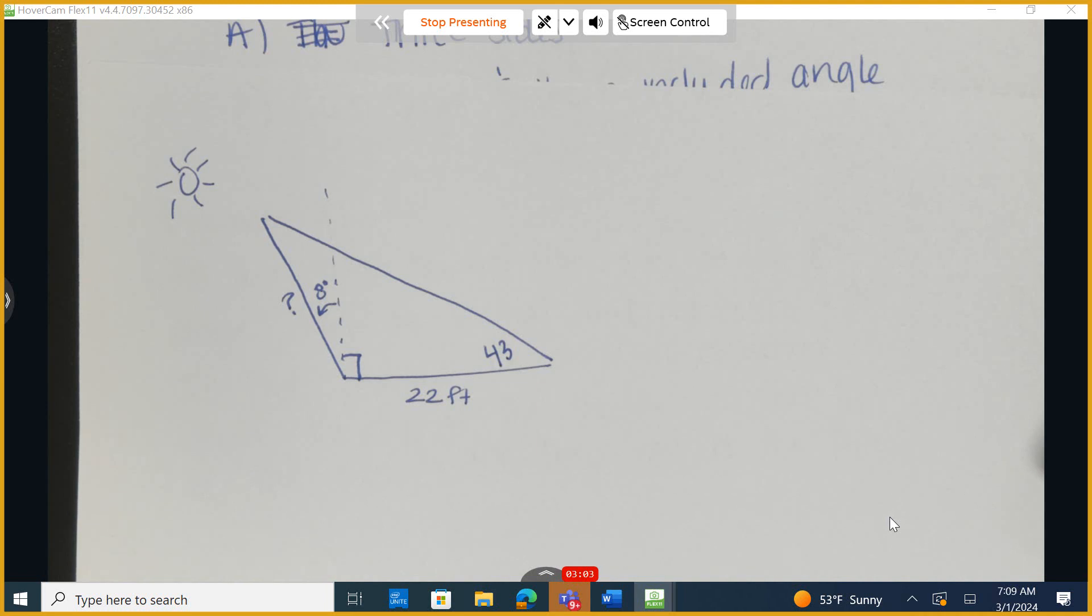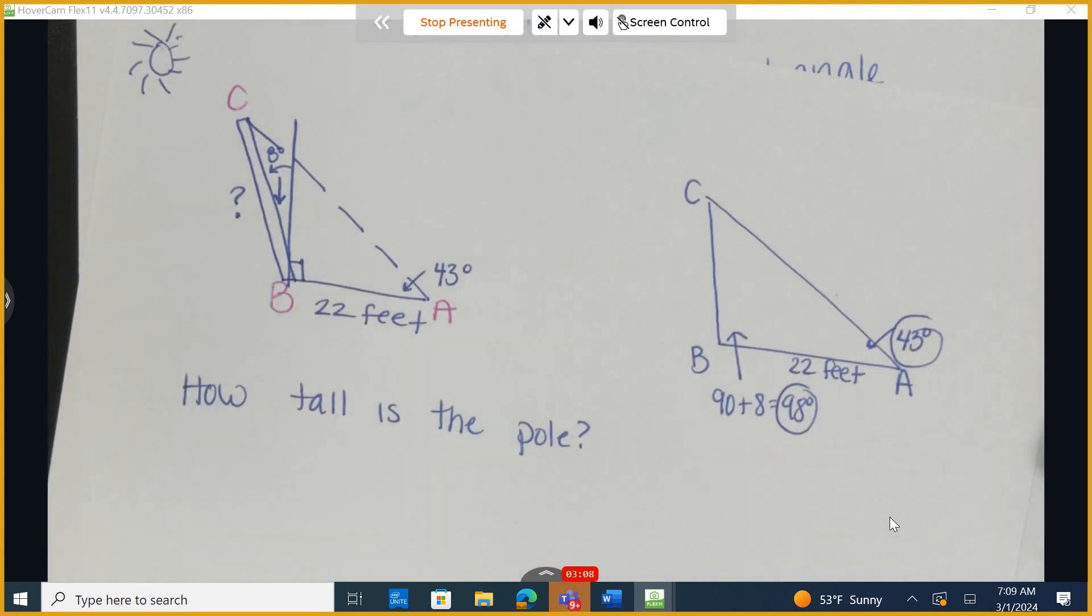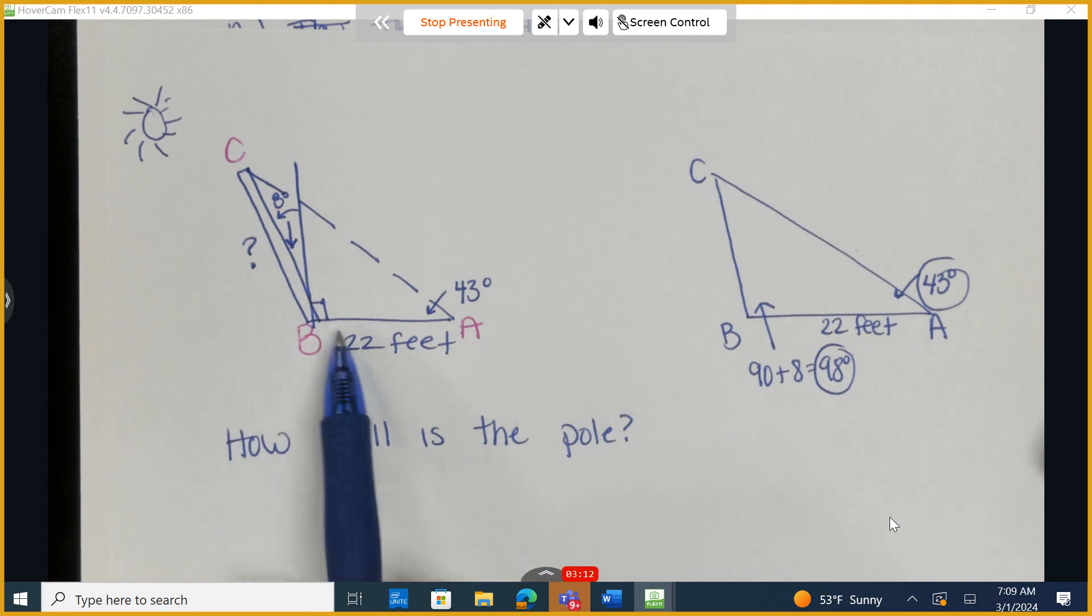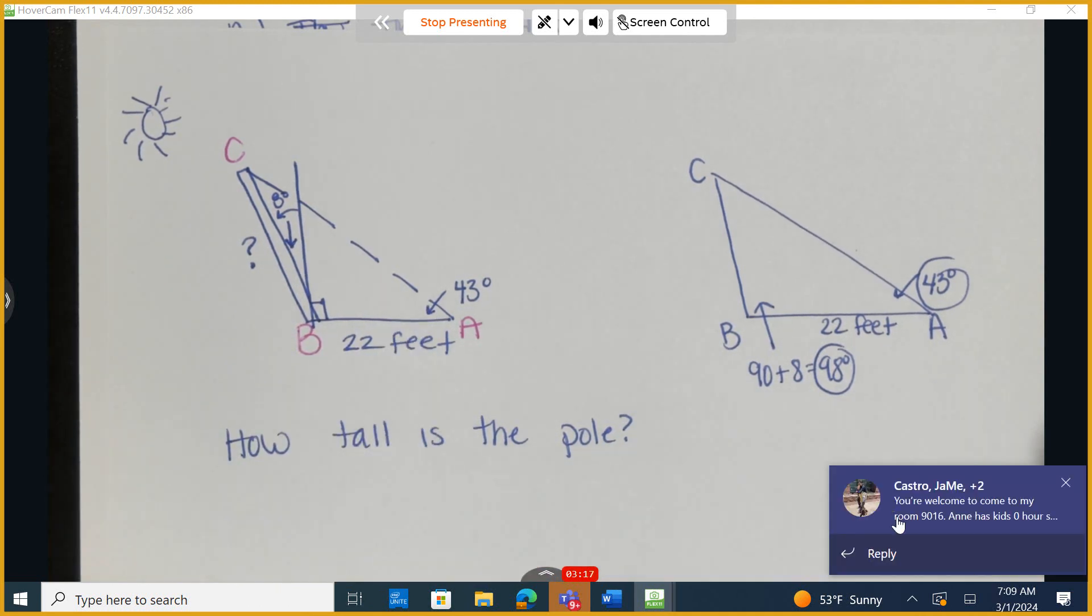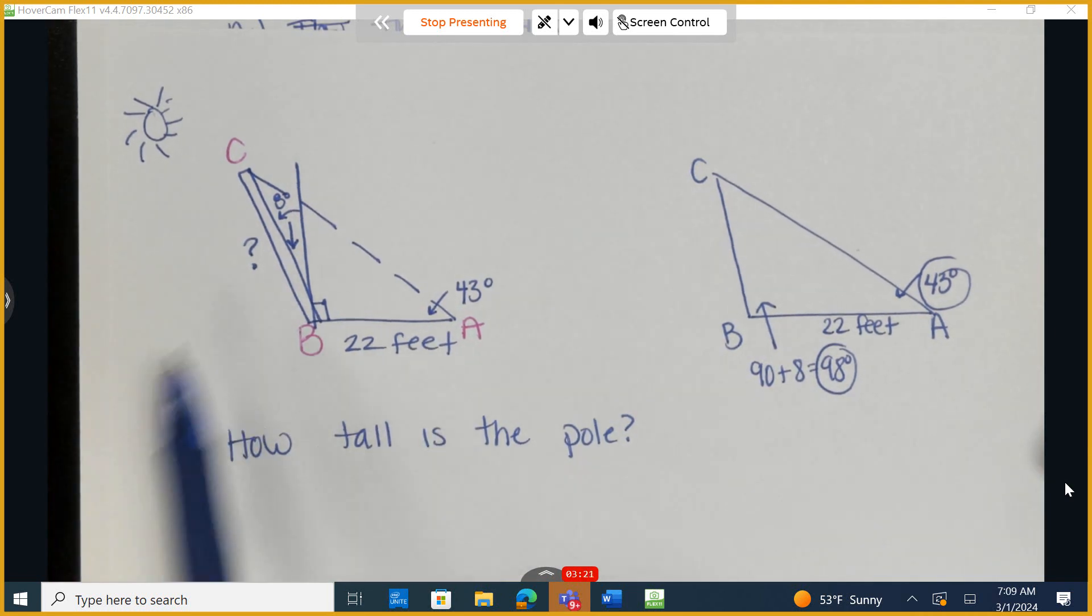So I went ahead and I drew this picture a little bit better. This is my pole. This is the 8 degrees where it tilts towards the sun. This is the shadow that's cast that's 22 feet long, and the angle of elevation. And we want to know ultimately what is this. So I took it out of the context of the problem, and I just drew a triangle.